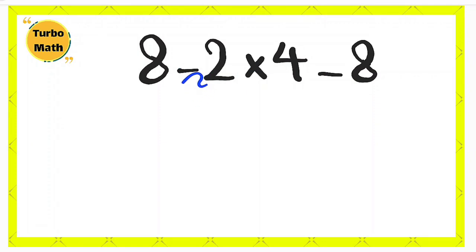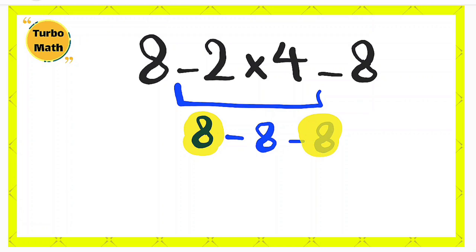First we do the multiplication because multiplication has higher priority than subtraction. Again, there are positive and negative numbers on both sides. They simplify and we get the final answer. The answer is -8.